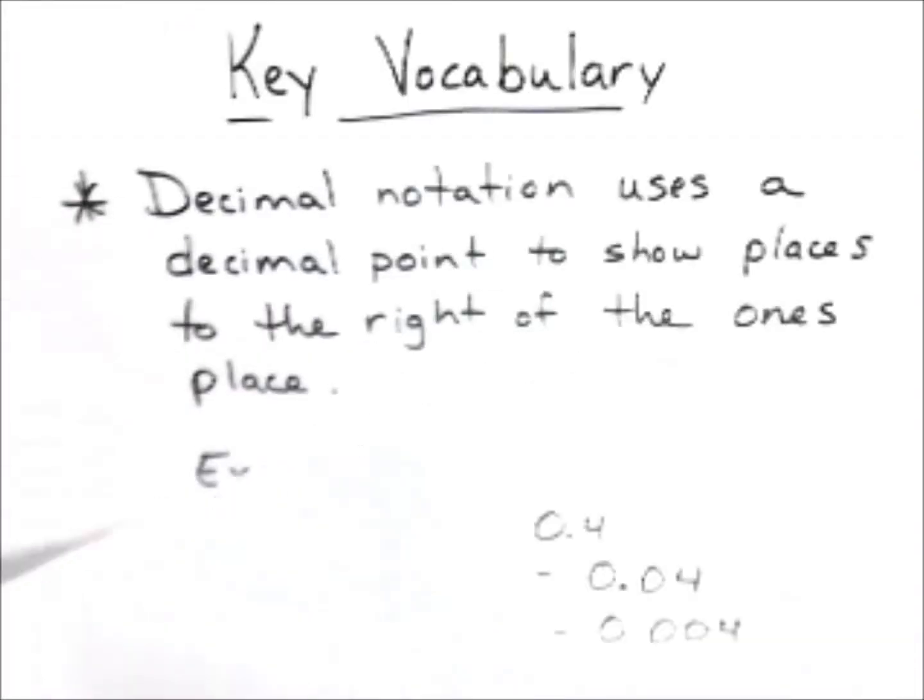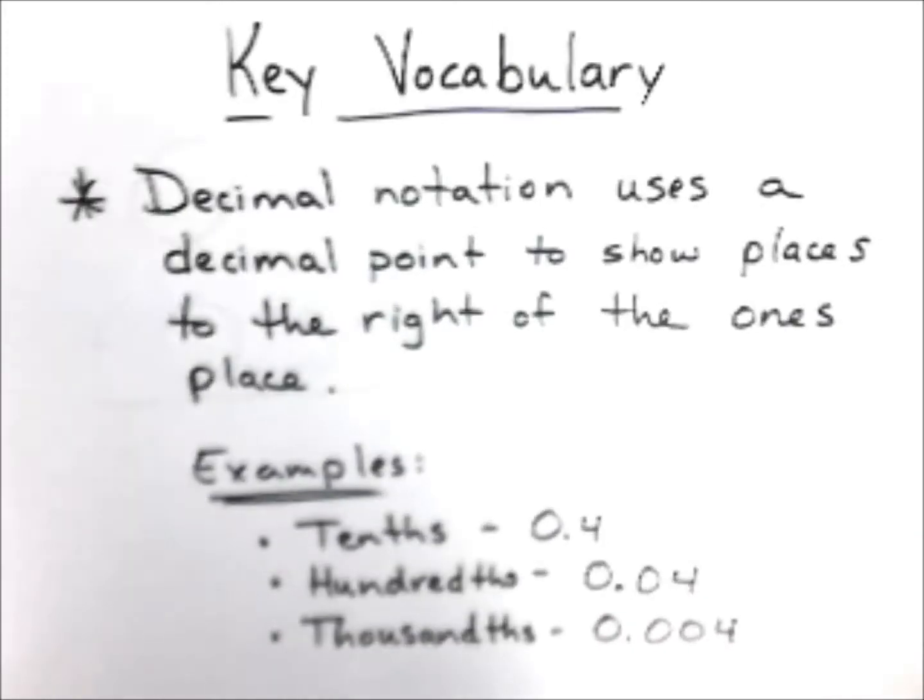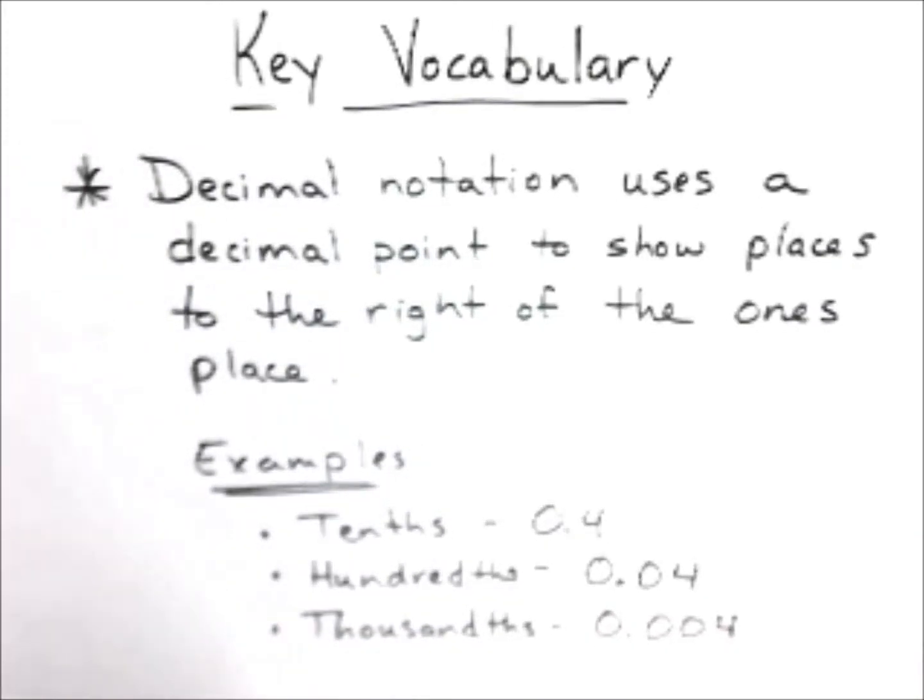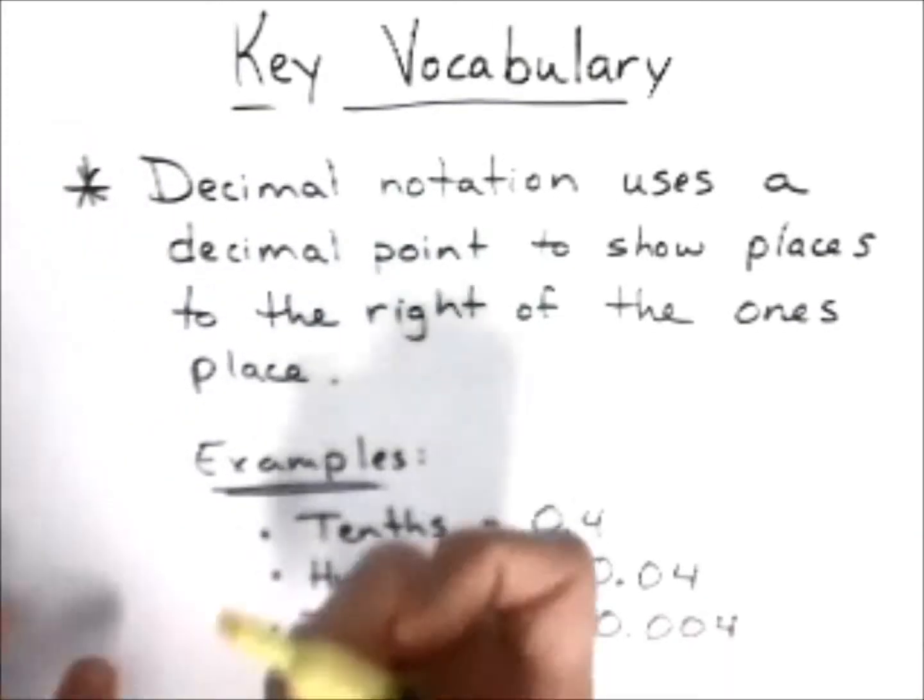Like it's on Facebook. Today we have our key vocabulary before we get going. First off, decimal notation uses a decimal point to show places to the right of the ones place.